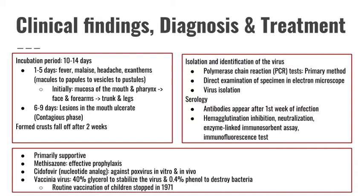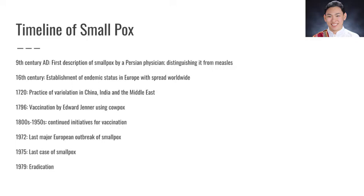The treatment would be supportive. We can give methisazone as prophylaxis, or an antiviral. For prevention of smallpox, the vaccine was given, although routine vaccination stopped in 1971. Smallpox was first identified by a Persian physician in the 9th century and has been endemic in Europe since the 16th century.